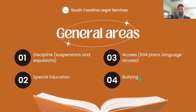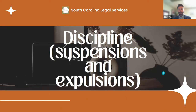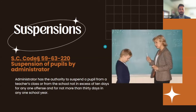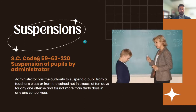The fourth area is bullying — we'll just touch briefly on that. So starting with discipline: suspensions and expulsions. Here's the code section on this. Administrators have the authority to suspend a pupil from class or from school — no more than 10 days for one incident, and not more than 30 days for the whole school year. That mirrors the federal special education law.